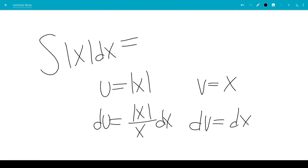So this will be u times v, which is x absolute value of x, minus the integral of v du. So that will be x times absolute value of x over x dx.